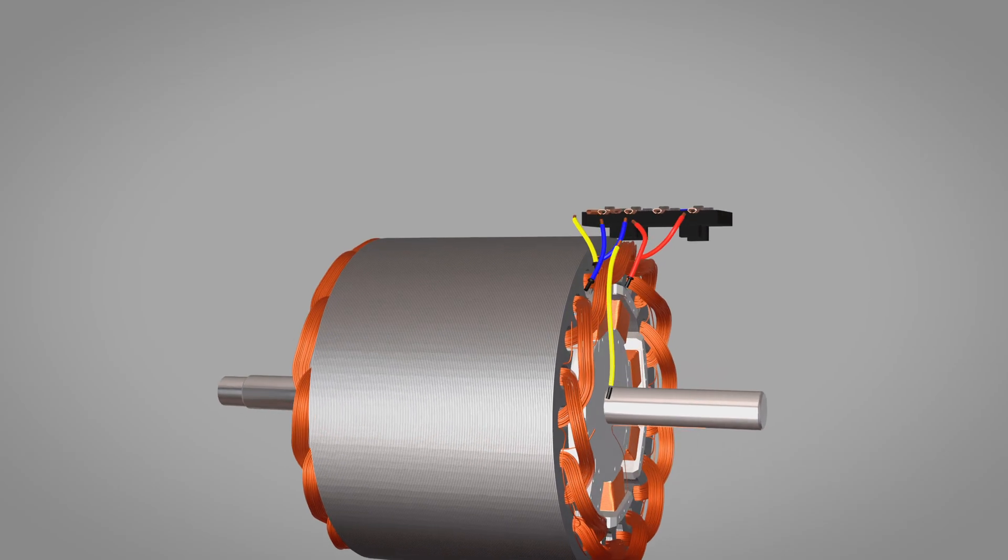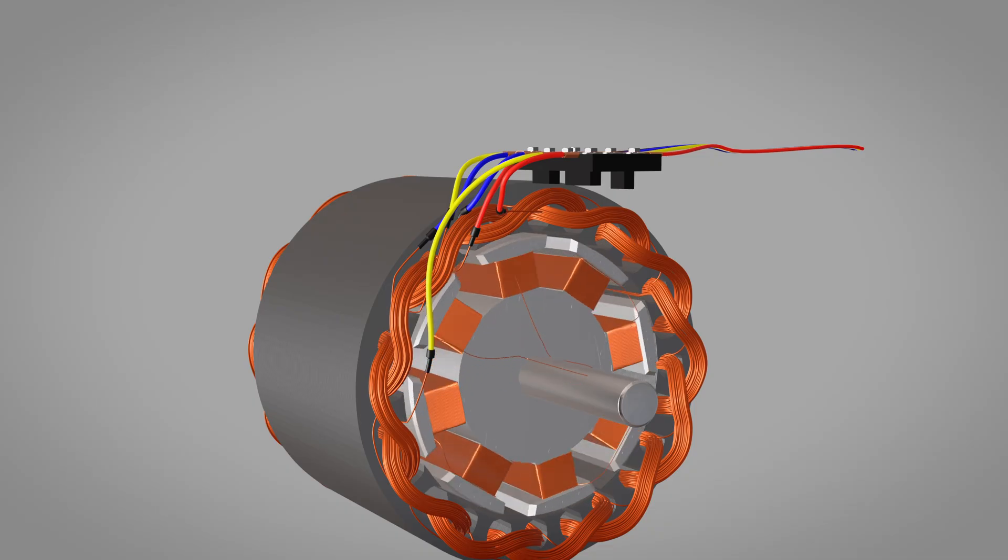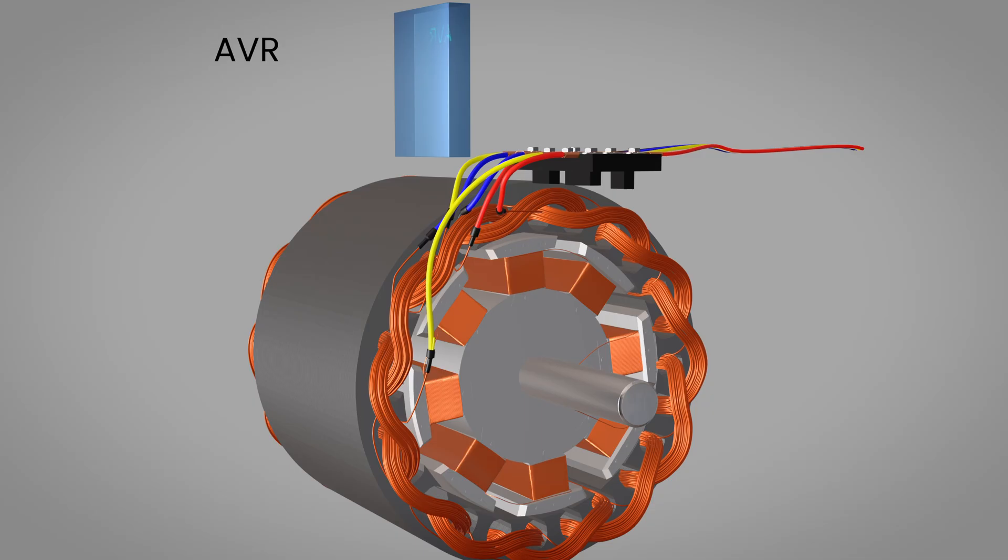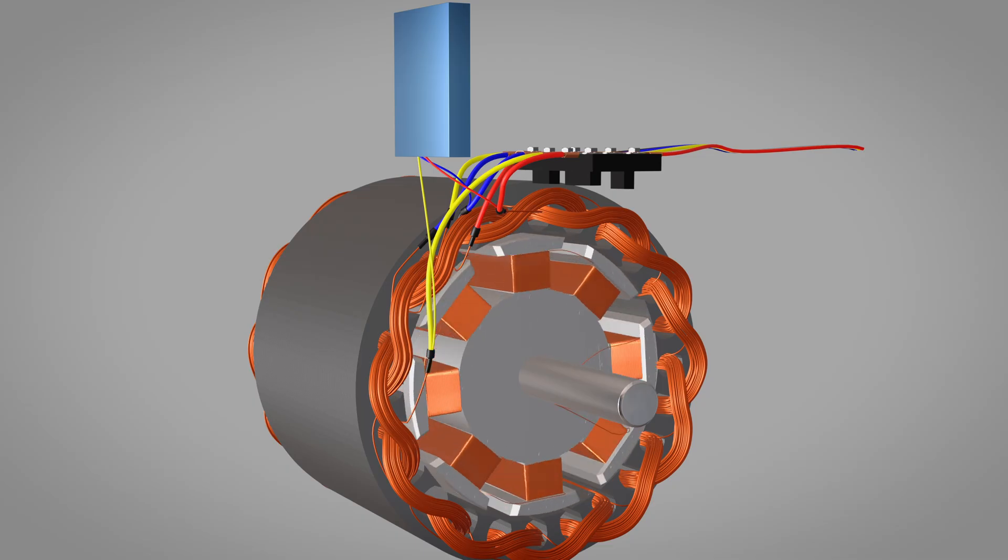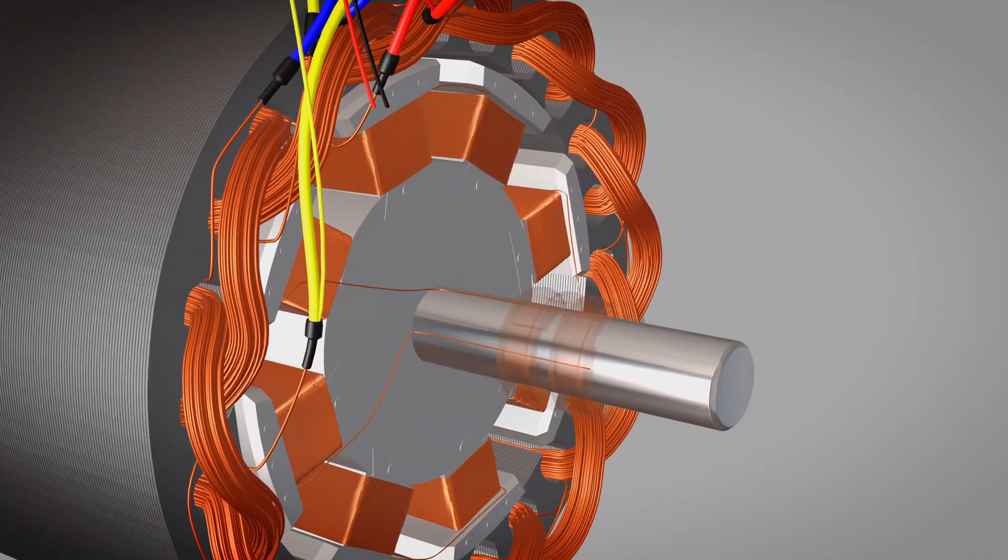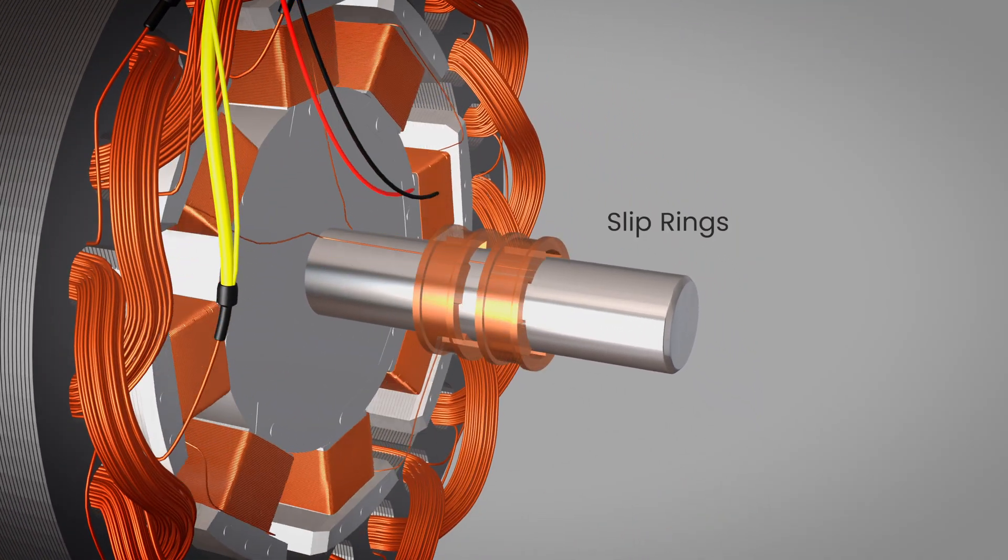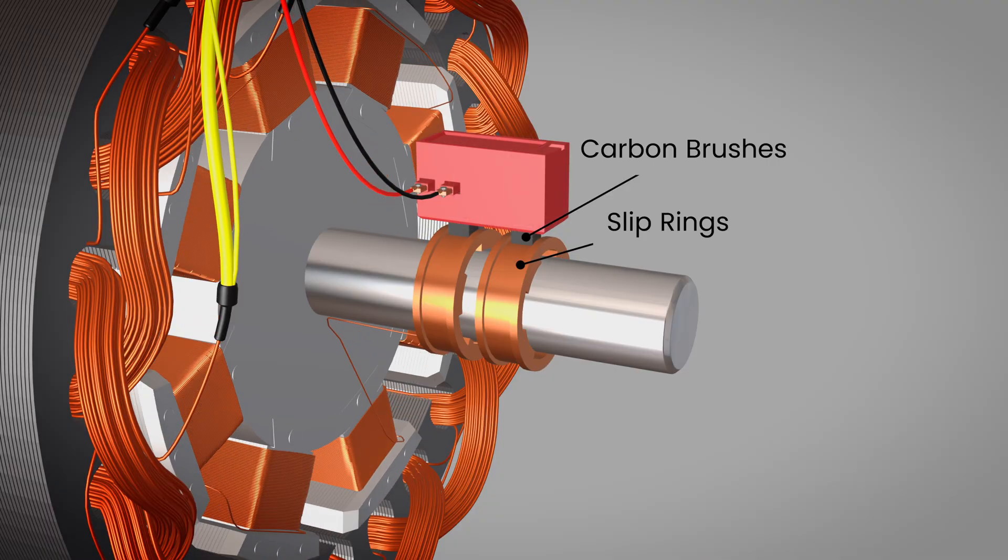Our alternator is known as shunt self-excited because it generates its own field current for armature coils without requiring any external DC source. At the heart of this system lies the automatic voltage regulator, AVR, which connects to the main output terminals and continuously monitors the generated voltage. Inside the AVR, rectifier diodes convert the stator's AC voltage into steady DC current, which is essential for creating stable magnetic poles in the rotor field windings. The converted DC current travels to the rotating rotor windings via slip rings, conductive rings mounted on the shaft, and carbon brushes that maintain constant contact with those rings as they spin.